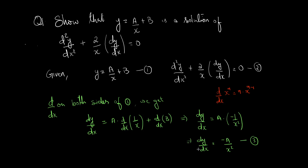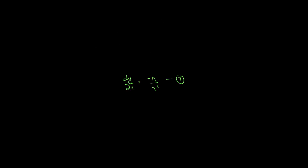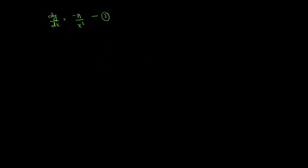We now need to find d²y/dx². Moving to the next screen, we will need equation 3: dy/dx = −a/x². To find d²y/dx², we differentiate with respect to x on both sides of equation 3.